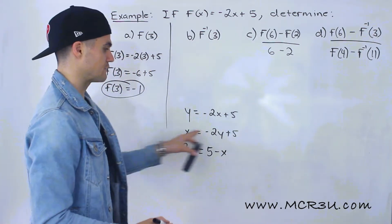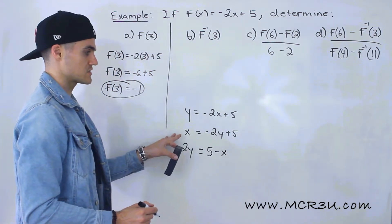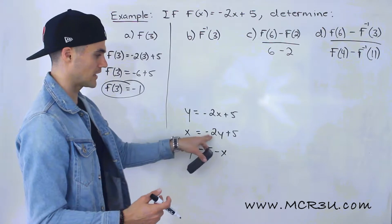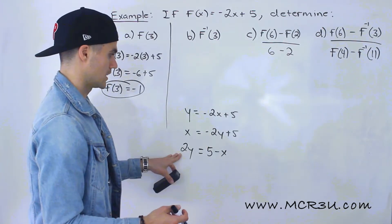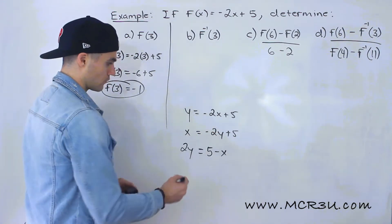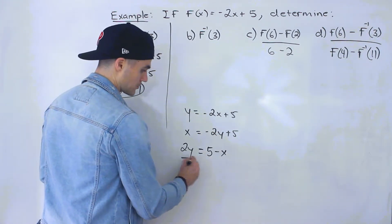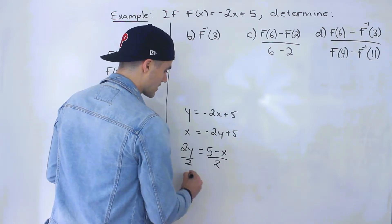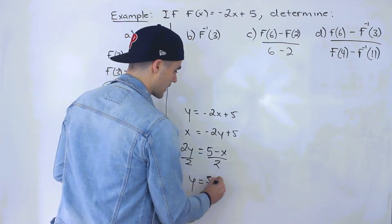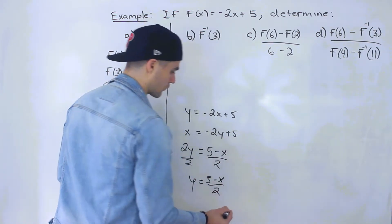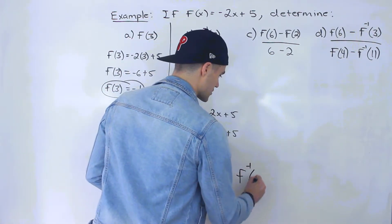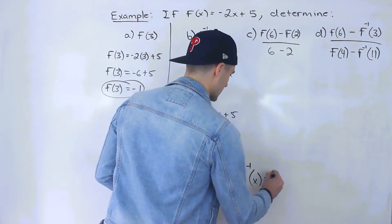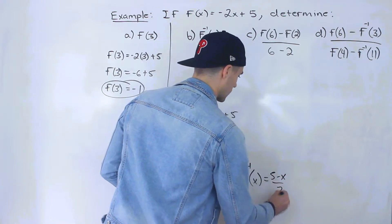So we'll have 5 minus x. We could have also brought the 5 over and had x minus 5 and then divided by -2, but I'd rather divide by a positive number. So brought the x over, brought the -2y over, and so divide both sides by 2 to get the y by itself. So y equals (5 - x)/2, which means that the inverse is (5 - x)/2.